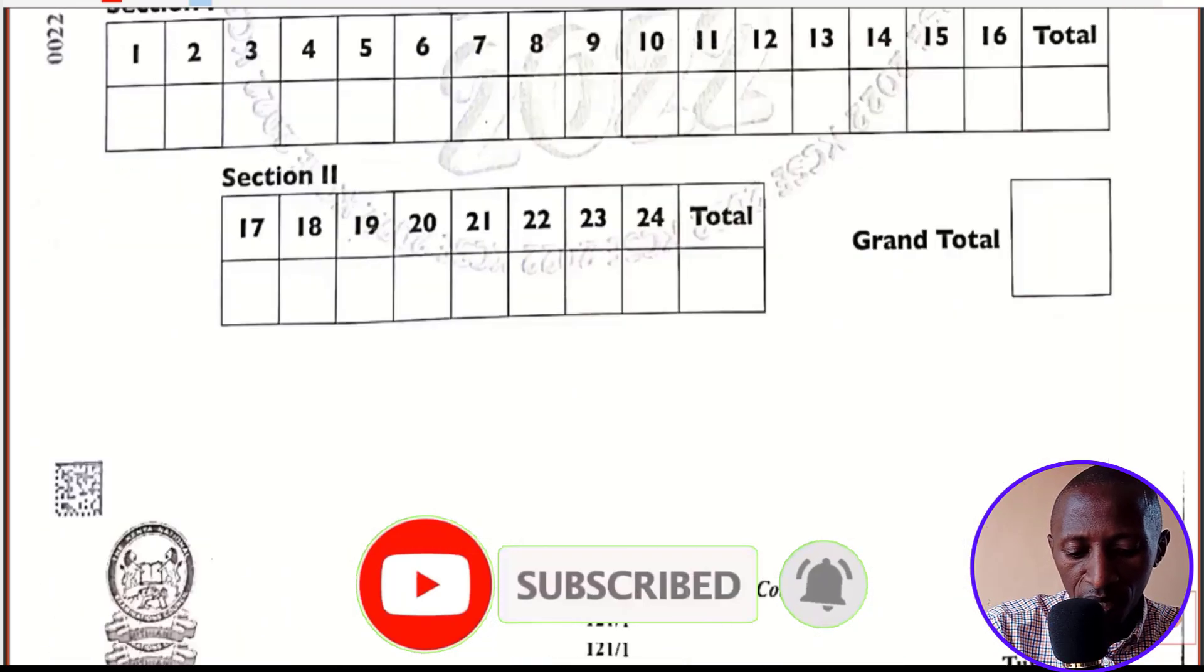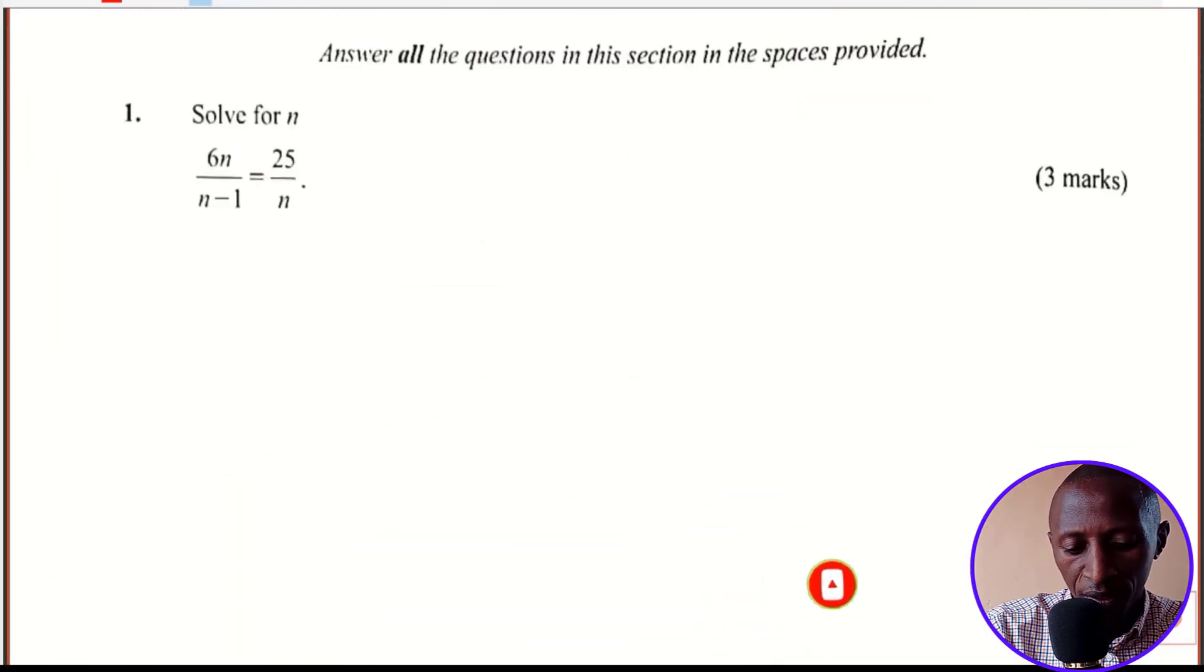Straight away let us move to question number one. In this year 2022, question number one was a question that tested on forming a quadratic equation and later on solving it. The question reads: solve for n, given 6n divided by n minus 1 is equal to 25 all over n.